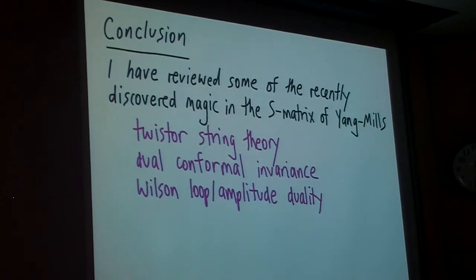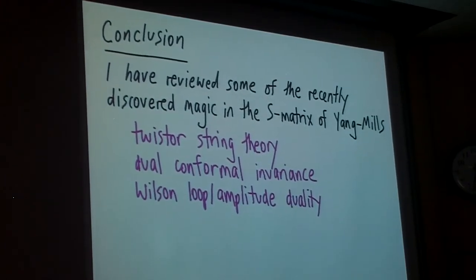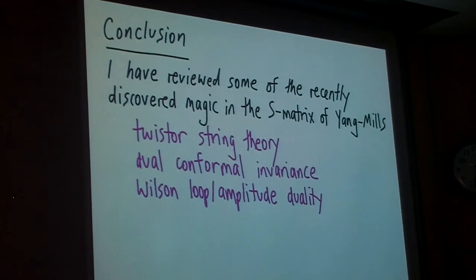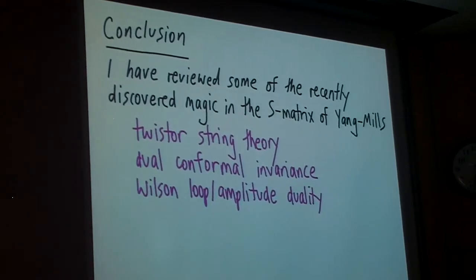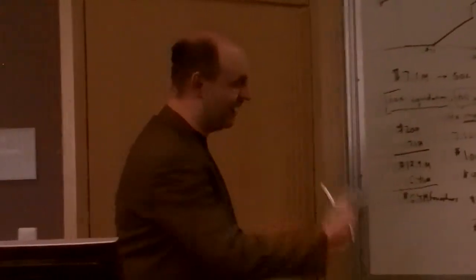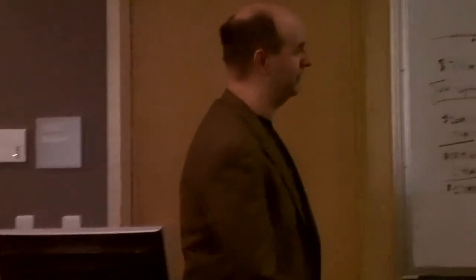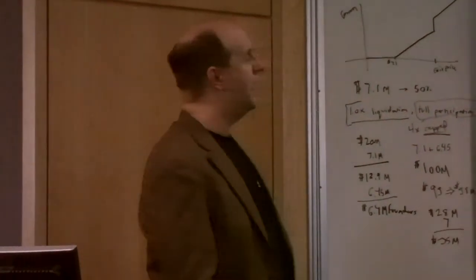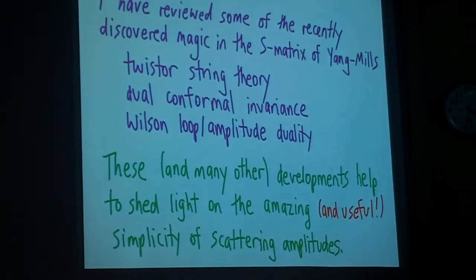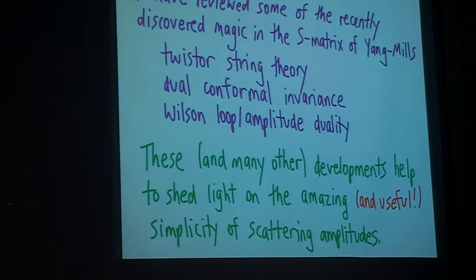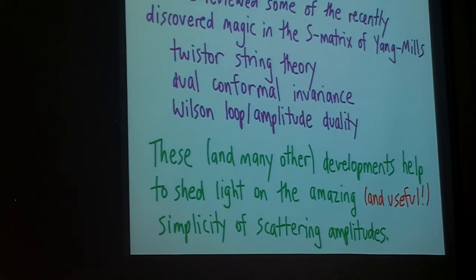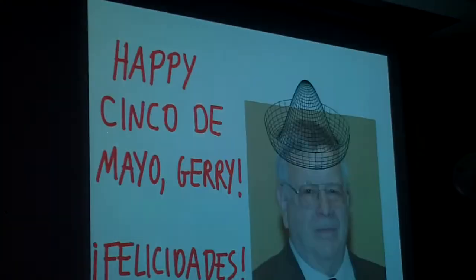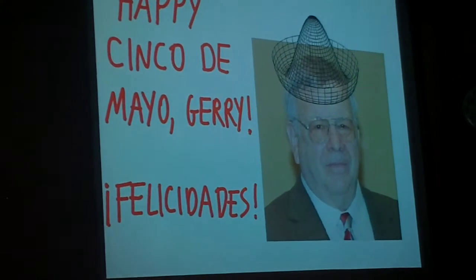So the conclusion is that I've reviewed only a very small portion of the recently discovered magic that we've seen in the S-matrix of Yang-Mills theory. I've mentioned twister string theory, dual conformal invariance, and, you know, moving at the speed of light, I passed briefly past the Wilson loop amplitude duality. These and many other recent developments helped to shed some light on the amazing and useful simplicity of scattering amplitudes. And with that, I thank you for your time listening to my talk, and I want to conclude, of course, by wishing Jerry a happy Cinco de Mayo. Congratulations.